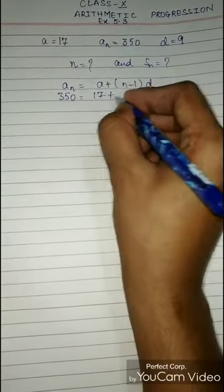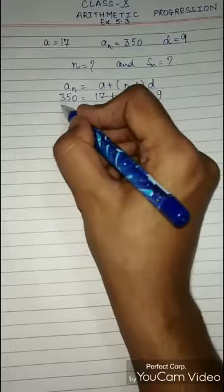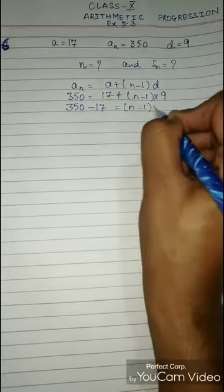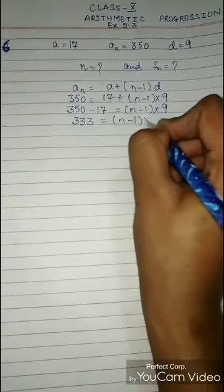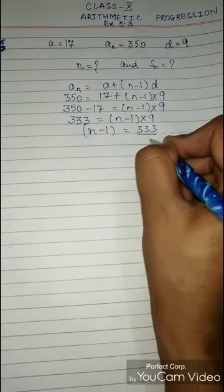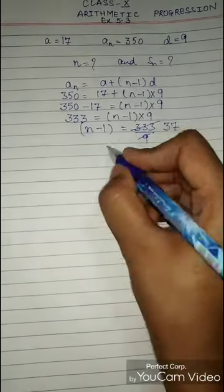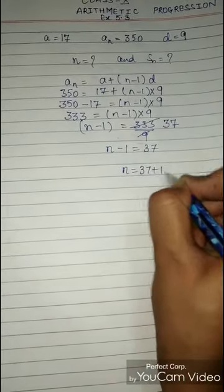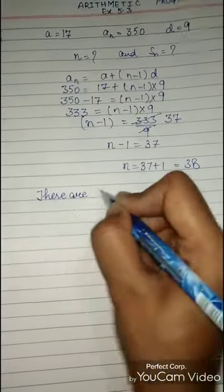Shifting 17 to the other side: 350 − 17 = (n−1)×9, which gives 333 = (n−1)×9. So n−1 = 333/9 = 37, therefore n = 37 + 1 = 38. There are 38 terms in the AP.